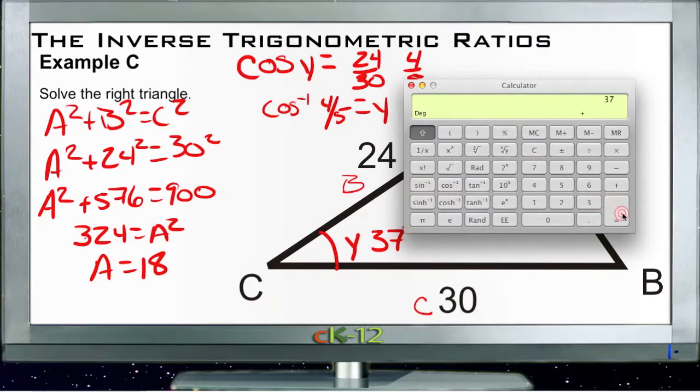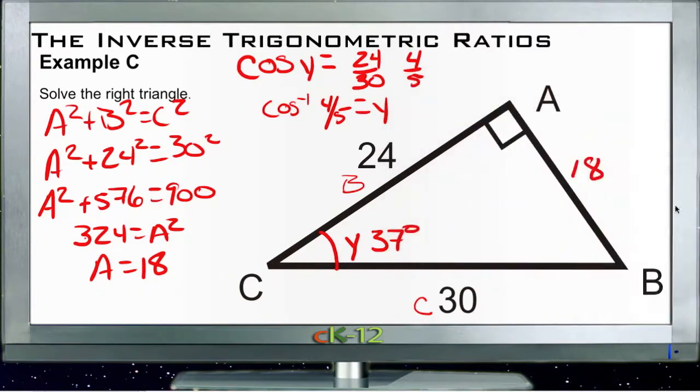If this one's 90 and this one's 37, then 90 plus 37 equals 127. We subtract that from 180 to get our final angle, which is 53 degrees. So this one has to be 53 degrees, and we're done. We have all our angles and all our sides.